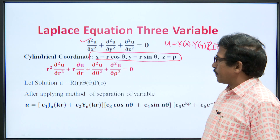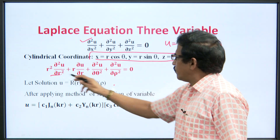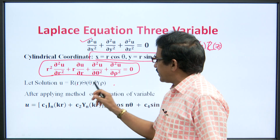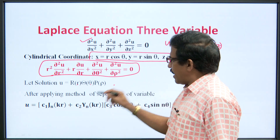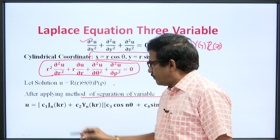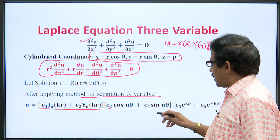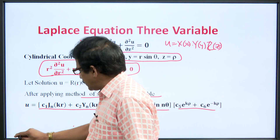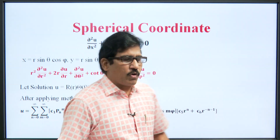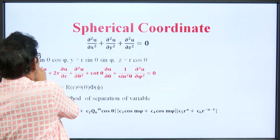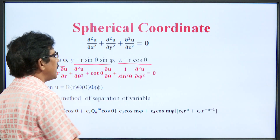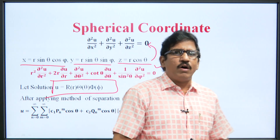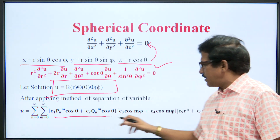To convert to cylindrical coordinates, substitute x = r cosθ, y = r sinθ, z = ρ. The equation transforms accordingly with three independent variables r, θ, and ρ. The assumed solution is a product of functions R(r), Θ(θ), and Z(ρ). Applying separation of variables, the r-component gives a Bessel function, while the θ-component is trigonometric and exponential. For spherical coordinates, with x = r sinθ cosφ, y = r sinθ sinφ, z = r cosθ, the equation transforms and solving by separation of variables gives the corresponding solution form.